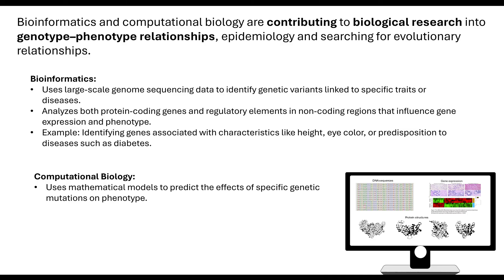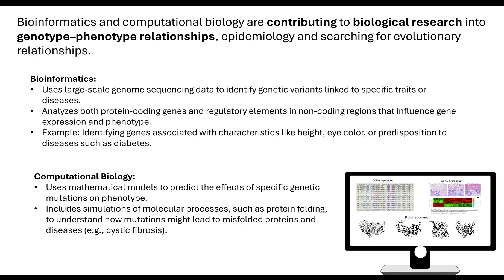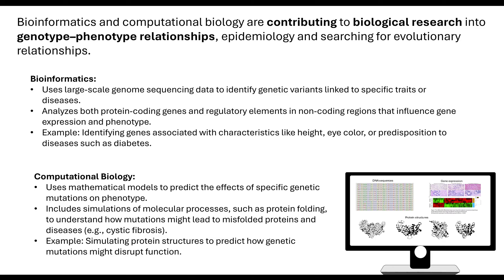The computational biology side involves using mathematical models to predict the effect of specific genetic mutations on a phenotype. This includes simulations of molecular processes, such as the way proteins are going to fold, to understand how mutations might lead to misfolding of proteins and disease. For example, simulating protein structure to predict how a genetic mutation might disrupt function — how it affects tertiary structure and therefore how it might affect the way it catalyses a reaction.